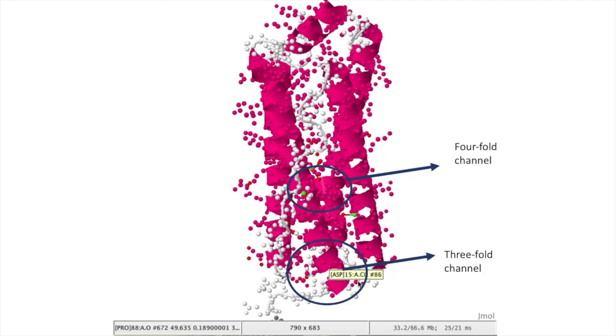Four-fold channels are non-polar because they are lined with leucine. Electrons are transferred through these channels to reduce the Fe3+ to Fe2+.